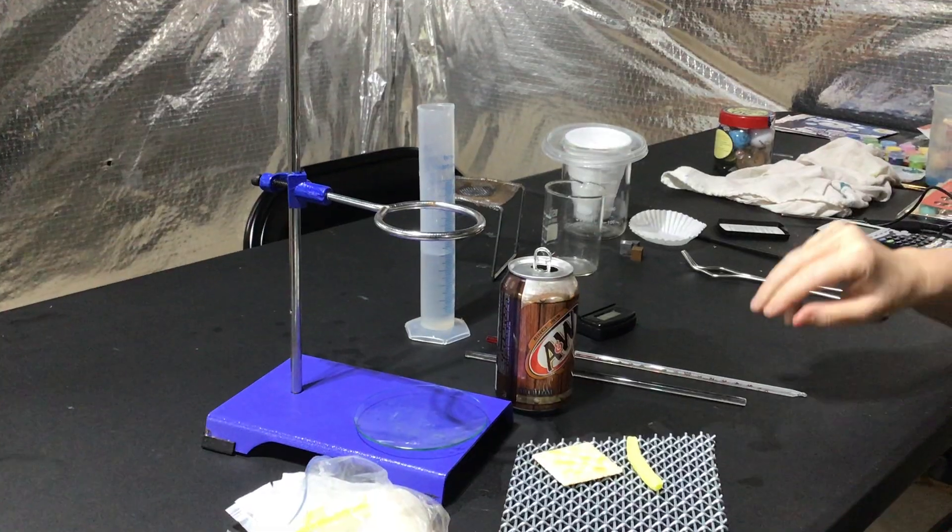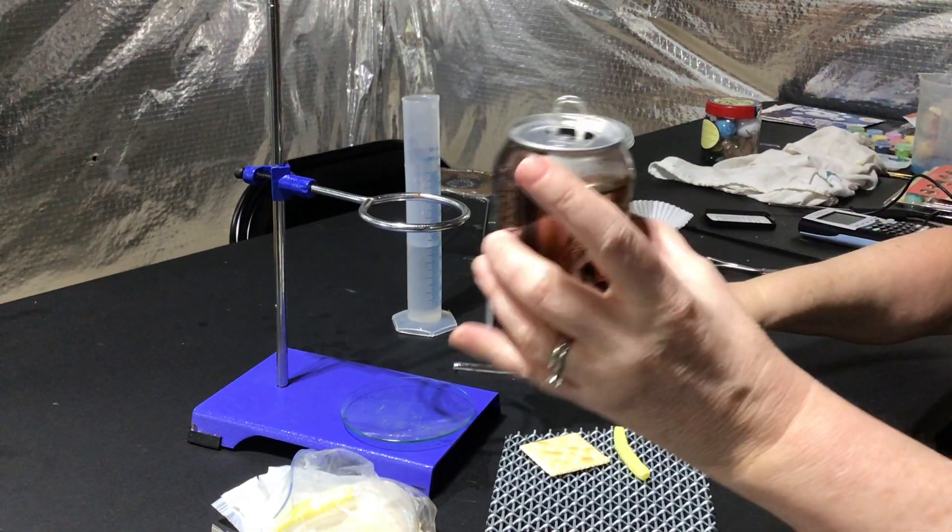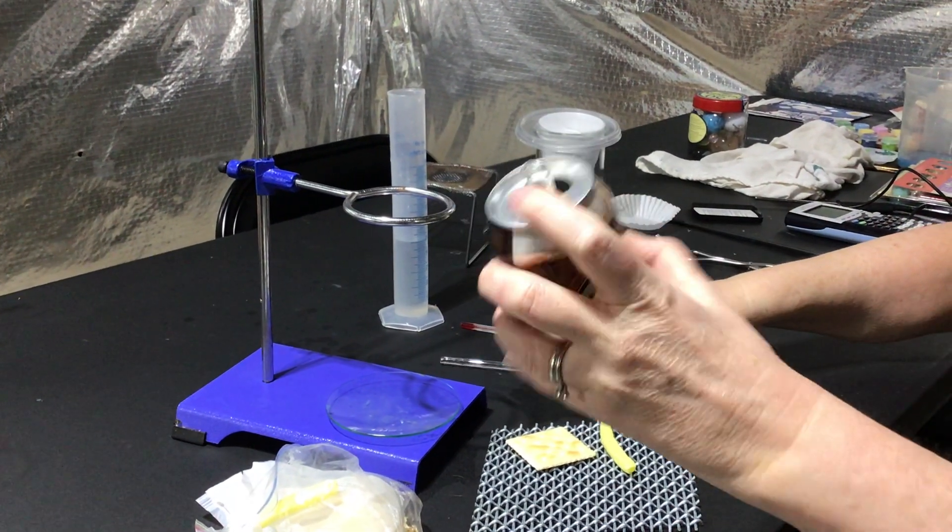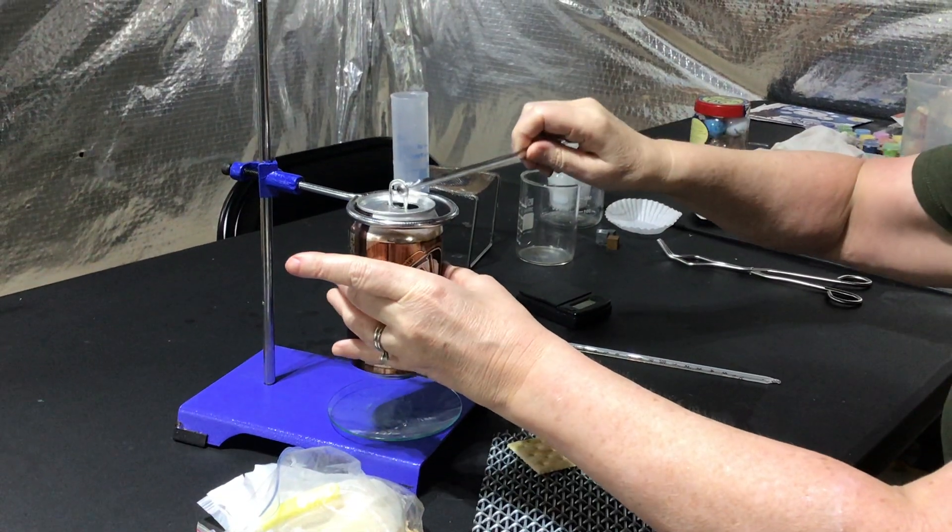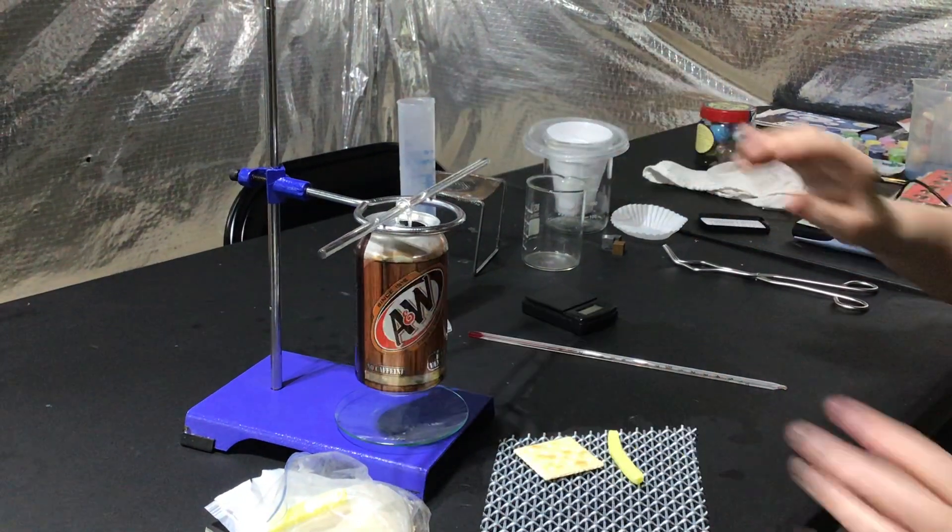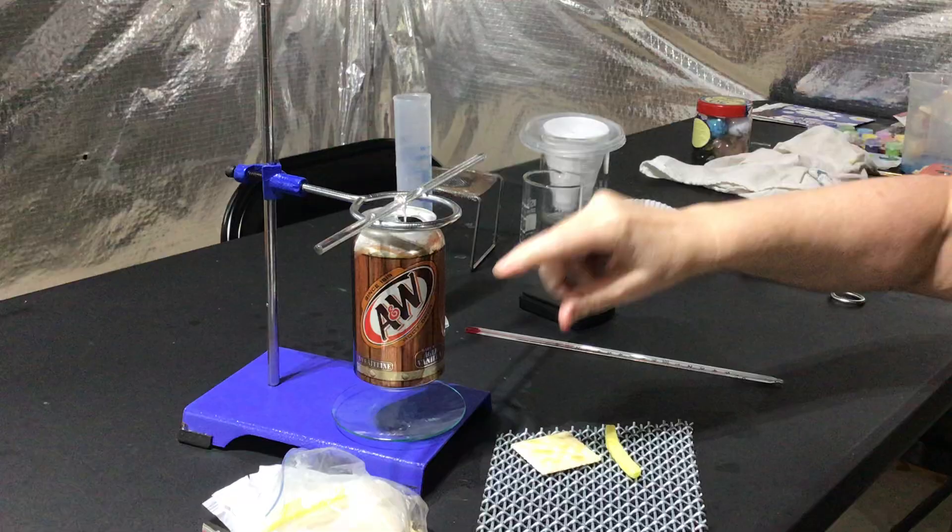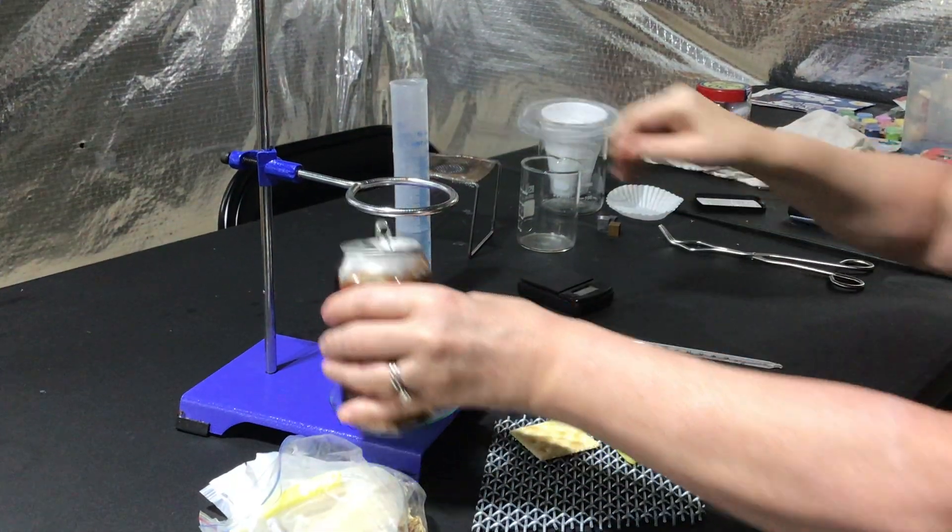Now, what you're going to do to set it up is notice I have the can and I just put up the ring. All right. You take and thread a glass rod right through the ring. Now, before you get started...